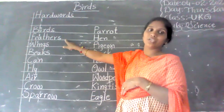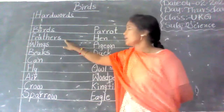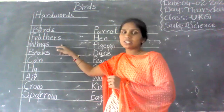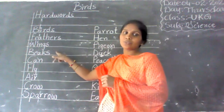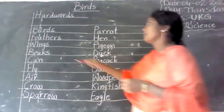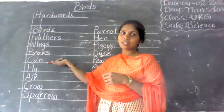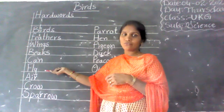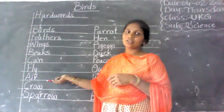Feathers — F-E-A-T-H-E-R-S. Wings — W-I-N-G-S. Beaks — B-E-A-K-S. Can — C-A-N. Fly — F-L-Y. Air — A-I-R.